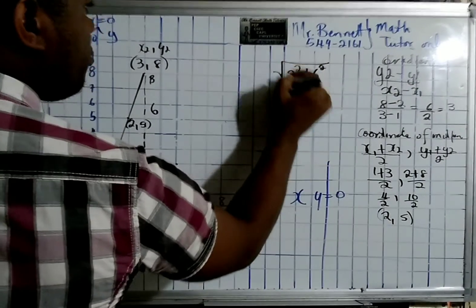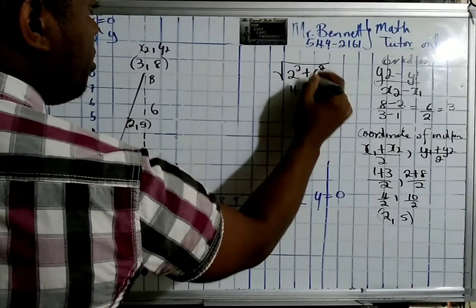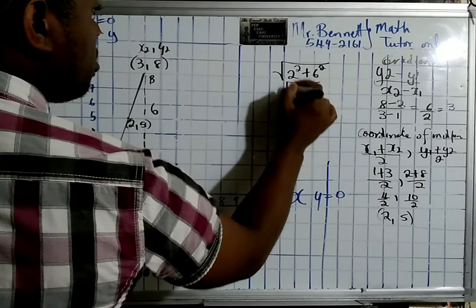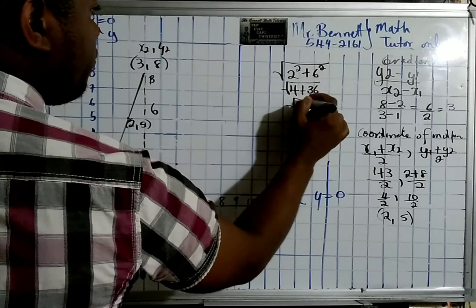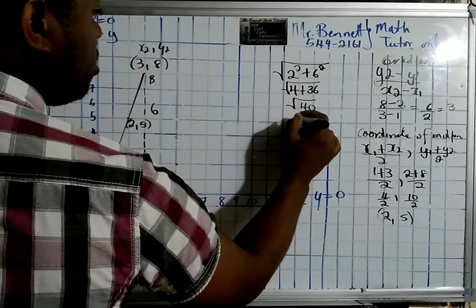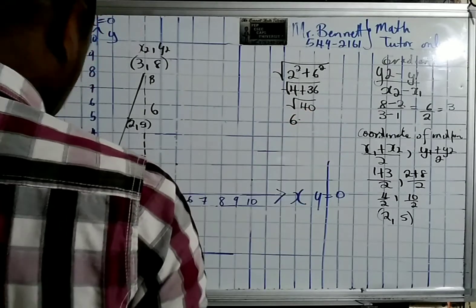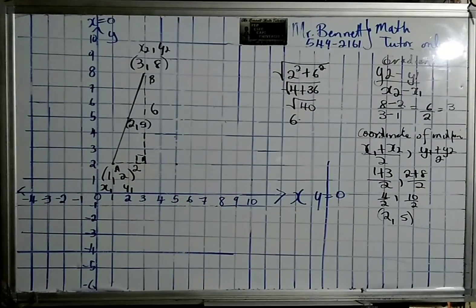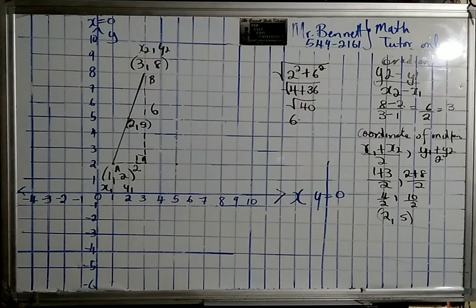So all we have to do is 2 squared plus 6 squared. Remember Pythagoras' theorem? So it's 4 plus 36, and that gives us 40. The square root of 40 is 6.32.